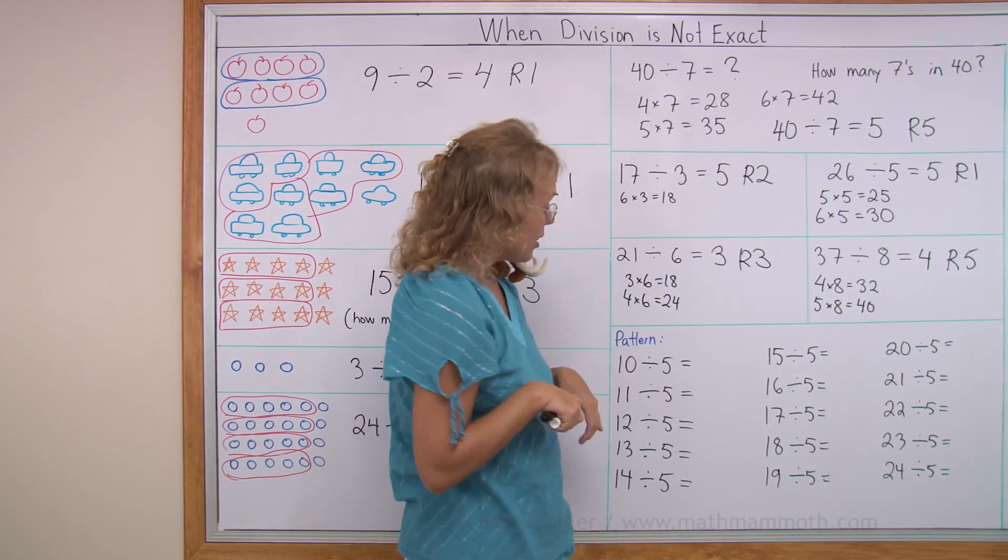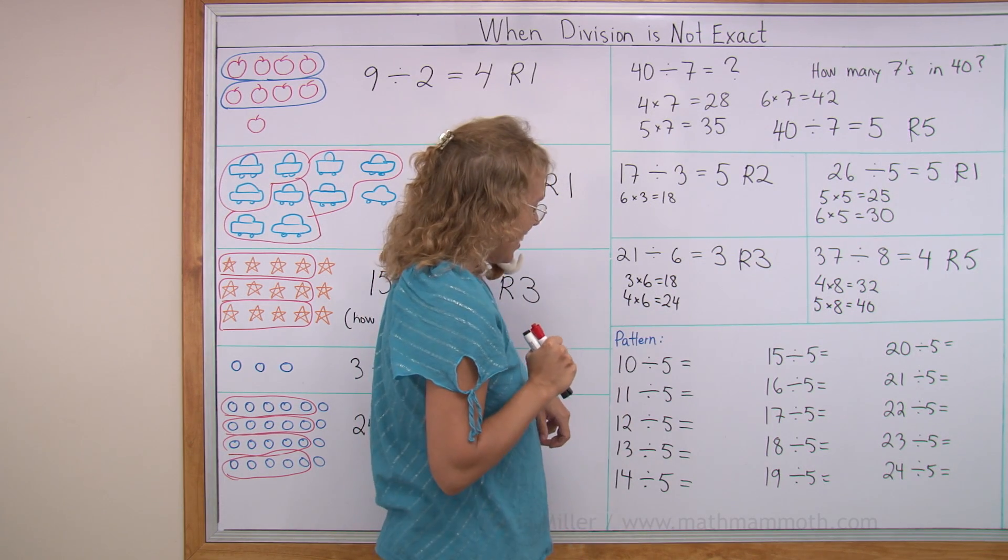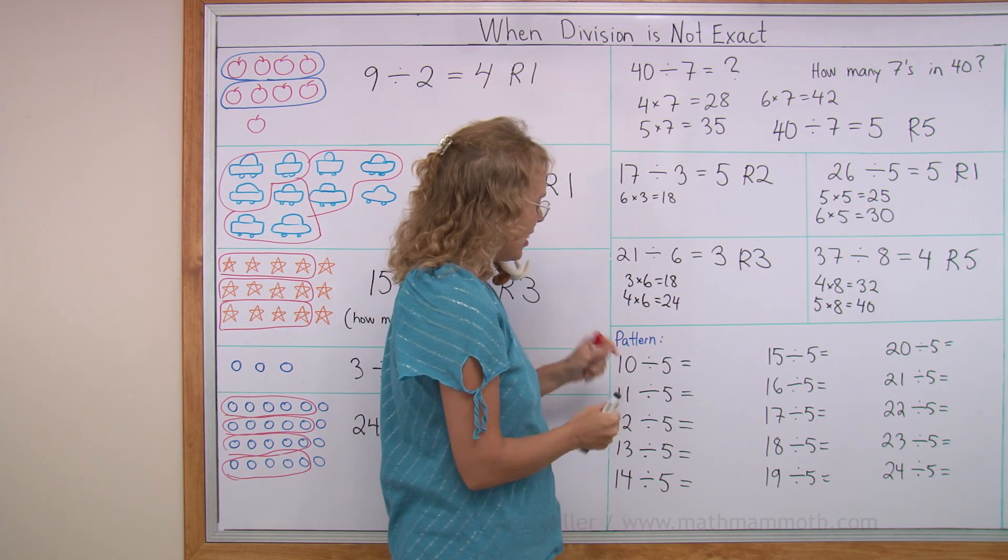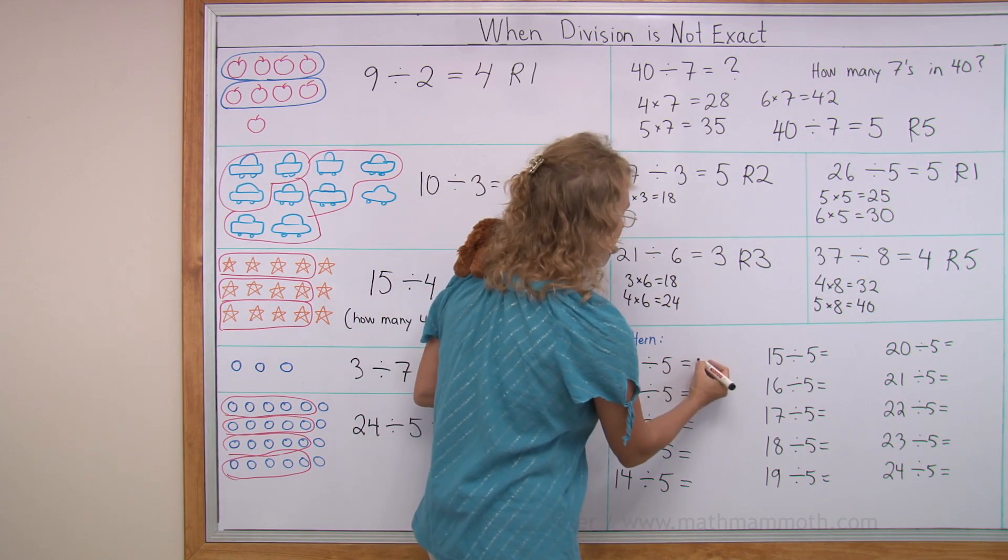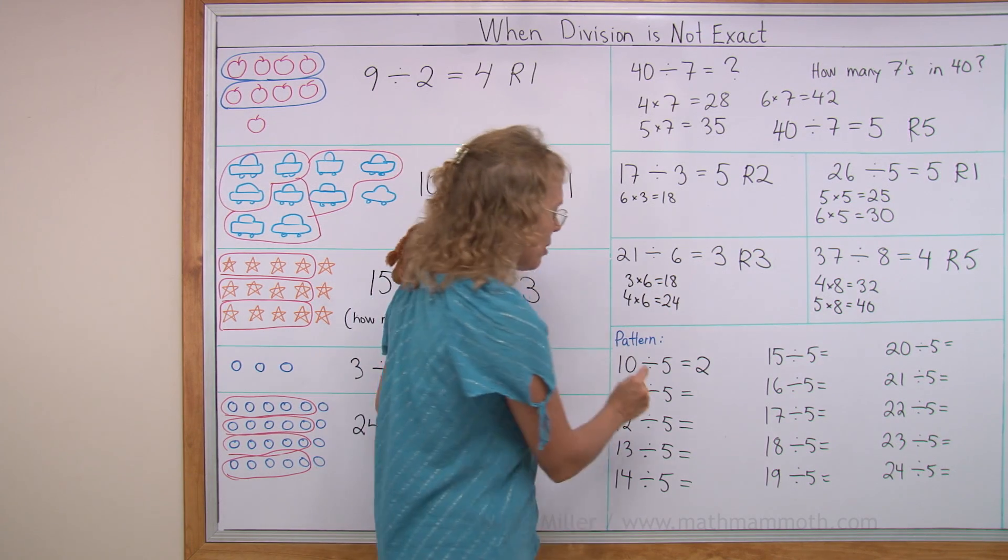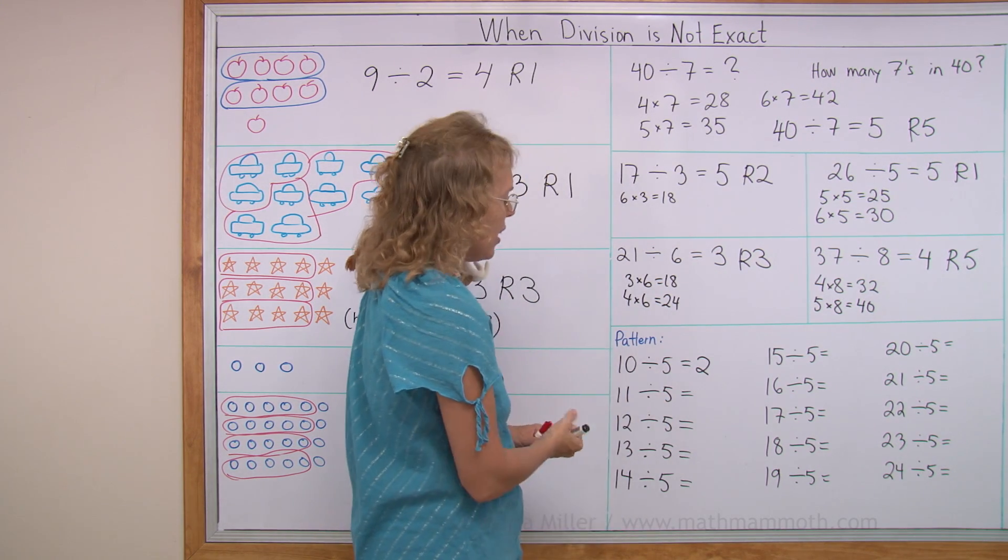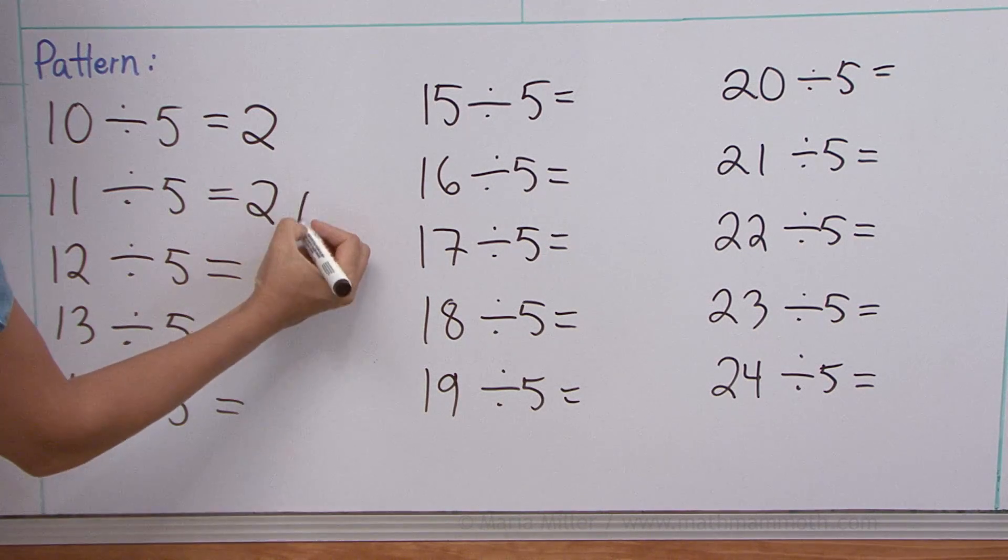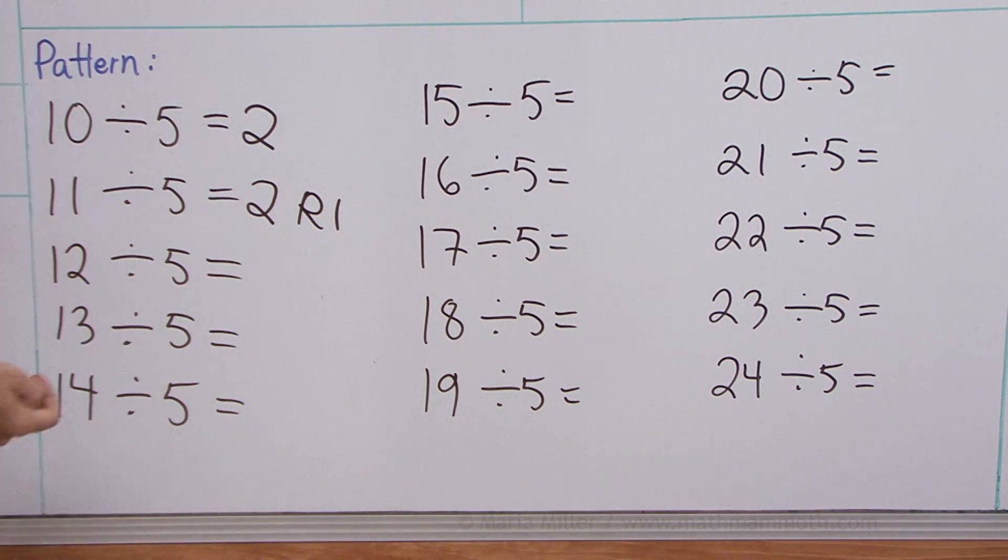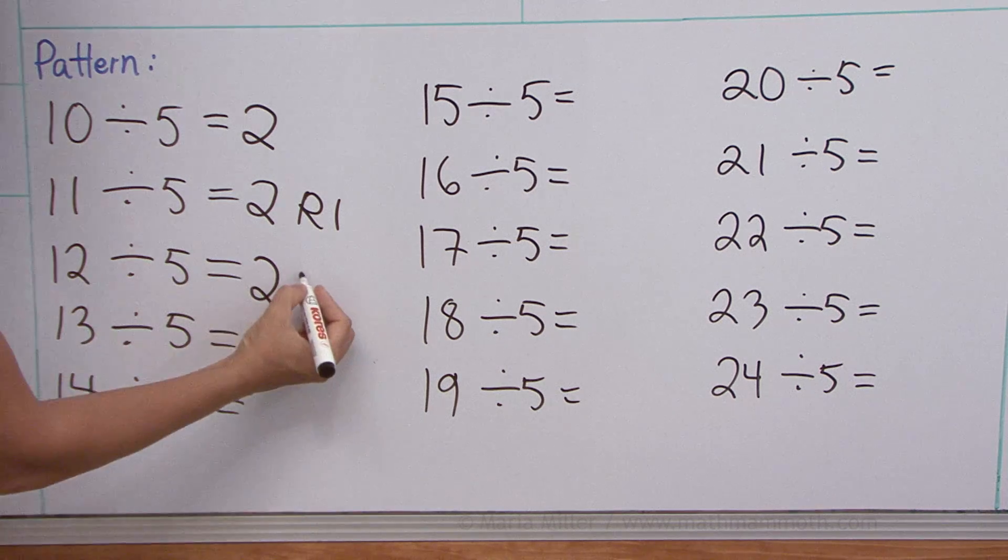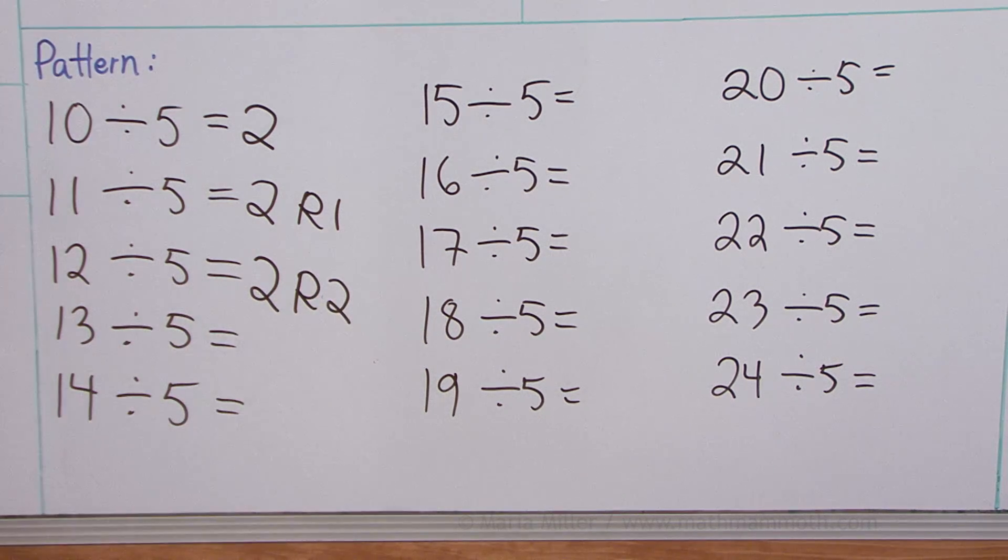Now lastly, we're going to look at a pattern. And it's quite an interesting pattern, I feel. Let's see. Ten divided by five. Well, that's just two. How about eleven divided by five, if you have one more? How many fives are in eleven? Still two. Two times five is ten. And now there's a remainder of one. How many fives are in twelve? Still just two fives, but this time we have two left over, or the remainder is two.